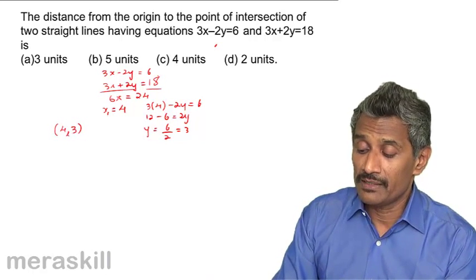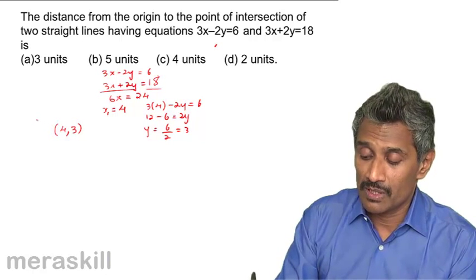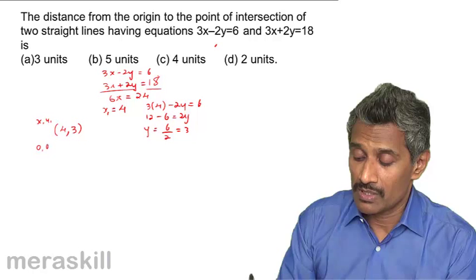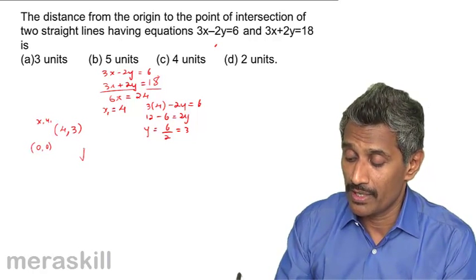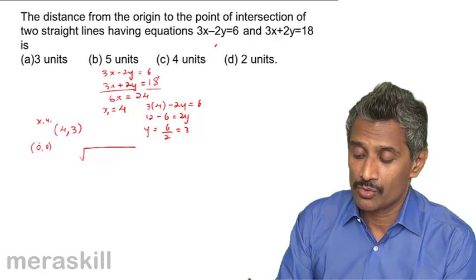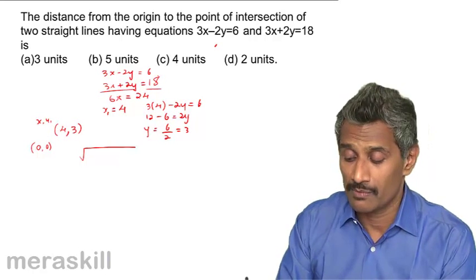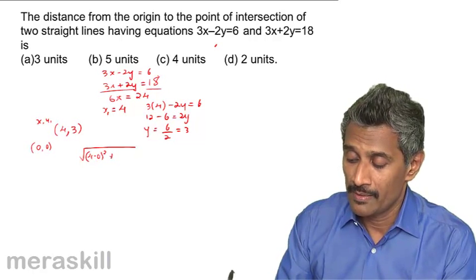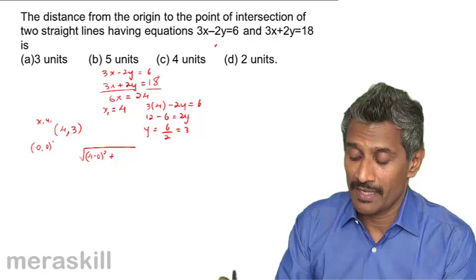Now find the distance between this point (4, 3)—call it x1, y1—and the origin (0, 0). It's the square root of (x1 minus x2) squared plus (y1 minus y2) squared, which is (4 minus 0) squared plus (3 minus 0) squared.